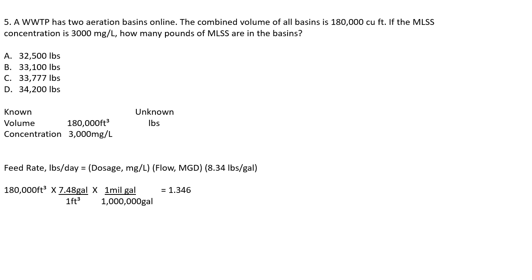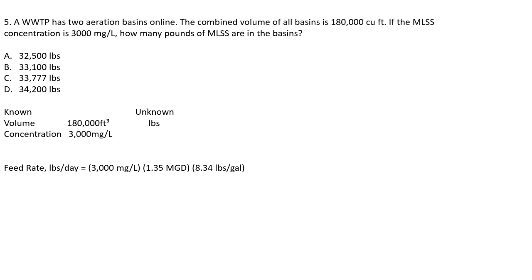Plugging into the pounds formula: 3,000 mg/L times 1.35 million gallons times 8.34 lb/gal = 33,777 pounds of MLSS. Answer: C) 33,777 pounds. That's it — five quiz questions solved. Hopefully this helps you learn. Thanks.